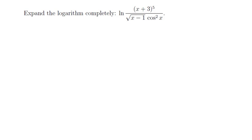Expand the following logarithm completely: the natural logarithm of (x plus 3) quantity to the 5, divided by the square root of (x minus 1) times cosine squared x.